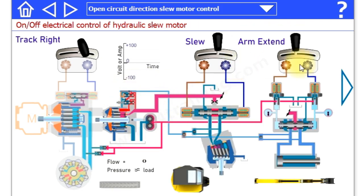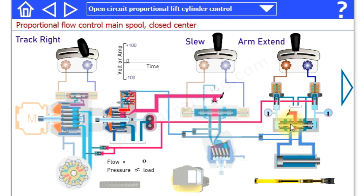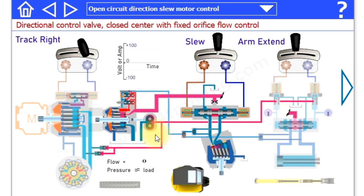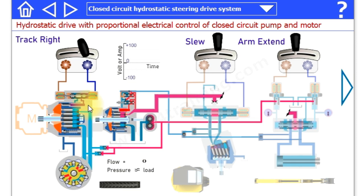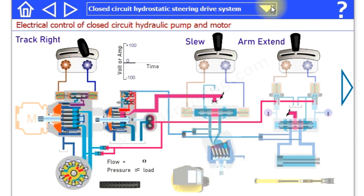We'll look at the load sensing system as well for a directional control slew and proportional pilot pressure control, proportional boom extend. So it's the various different circuits, gives them a nice introduction and helps you understand what's going on.